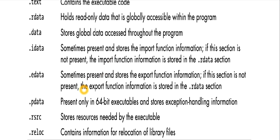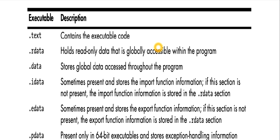Additional sections include: .edata, which is sometimes present and stores export function information — if not present, export function information is stored in .rdata; .pdata, which is present only in 64-bit executables and stores exception handling information; .rsrc, which stores resources needed by the executables; and .reloc, which contains information for relocation of library files. These are the important sections.